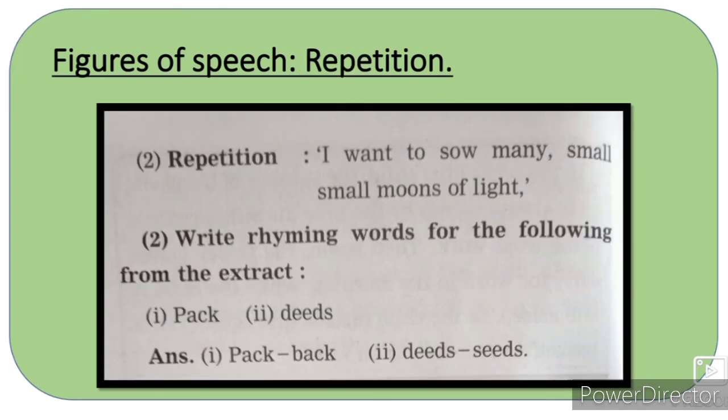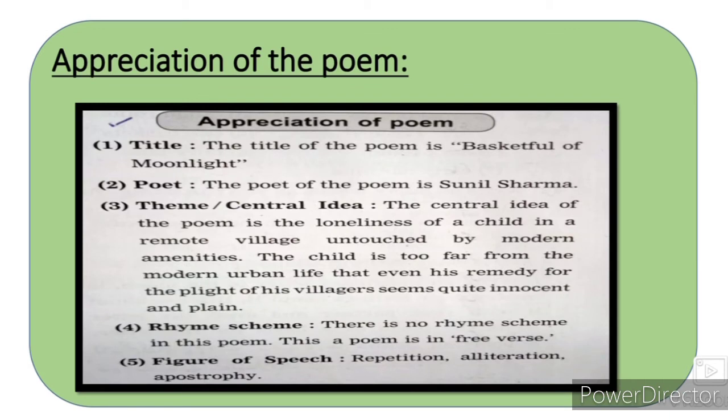Figures of speech میں repetition کی activity ہے — یہاں words یا پورا stanza repeat ہوتا ہے۔ مثال: 'I want to sow many small small moons of light' — یہاں 'small small' دو بار repeat ہوا ہے، اس لیے یہ repetition ہے۔ Pair of rhyming words: 'pack' کے لیے 'back'، 'deeds' کے لیے 'seats' — اس طریقے سے rhyming words استعمال کریں گے۔